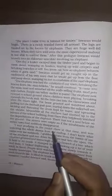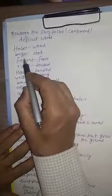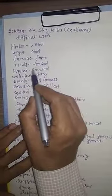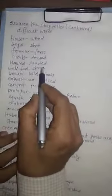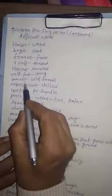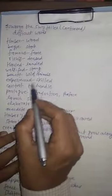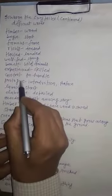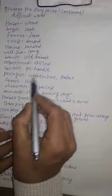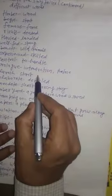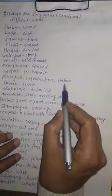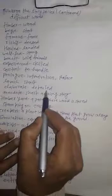Now, I come to the difficult words. Timber means wood. Begin means start. Famous means fame. Richly means dense. Hauled means loaded. Well-fed means strong. Beast means wild animals. Experienced means skilled. Controlled means to handle. Prologue means introduction or preface. Launch means start. Elaborate means detailed.